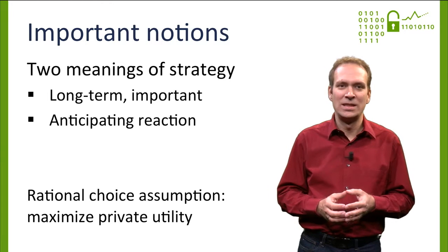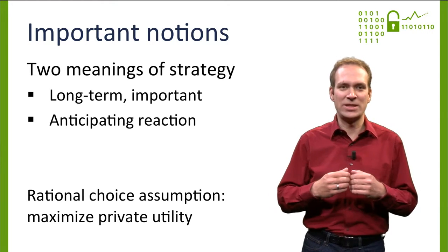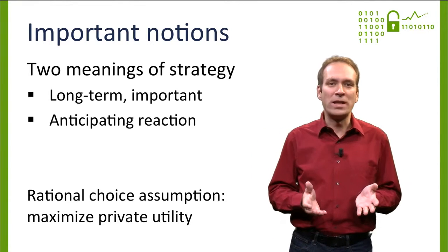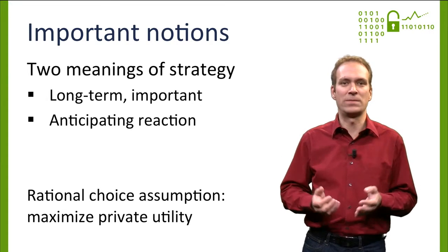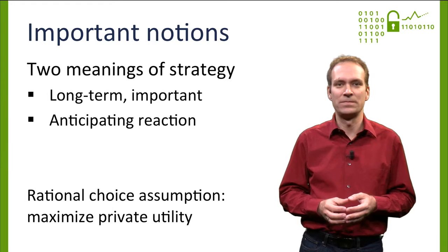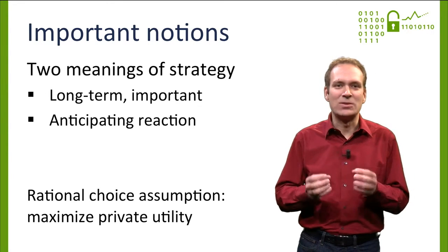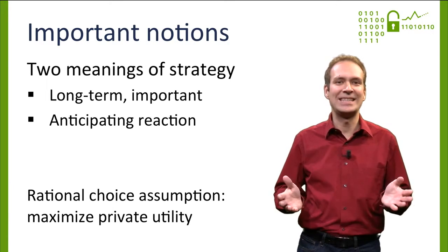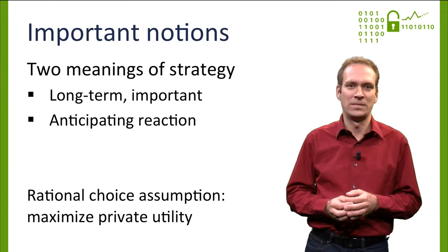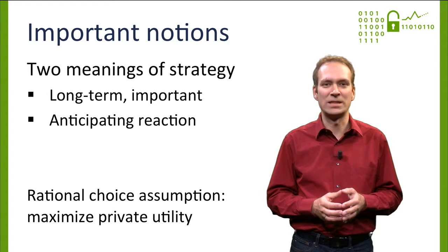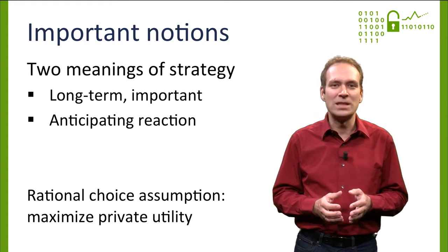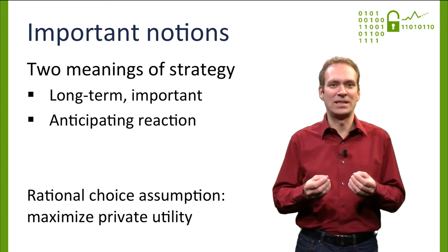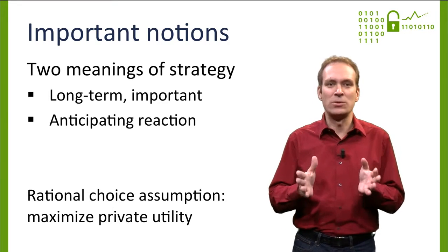When we talk about management, we usually take the perspective of a single organization, or perhaps of a single department within a larger organization. This differs in one important aspect from a global or policy perspective taken in other segments of this course. A manager's objective is to maximize private benefit for his organization, rather than utility for an entire ecosystem or society at large. There is nothing wrong with taking this selfish perspective for a moment — it is primarily the responsibility of policy to create an environment where the sum of actions that result from private utility maximization supports a desirable social outcome.